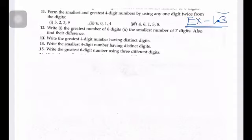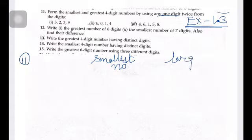The 11th question is: Form the smallest and greatest 4-digit number by using any one digit twice. We can use one digit twice. We have to write the smallest number and the largest number. Our digits are: first part, our digits are 5, 2, 3, and 9.